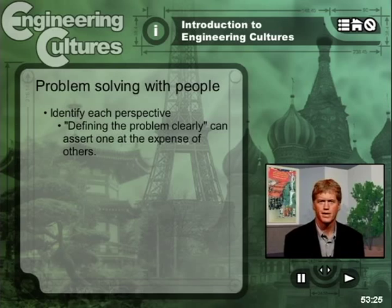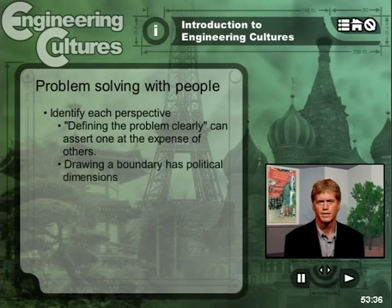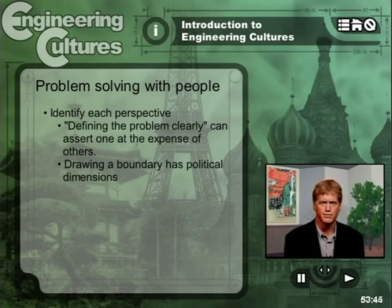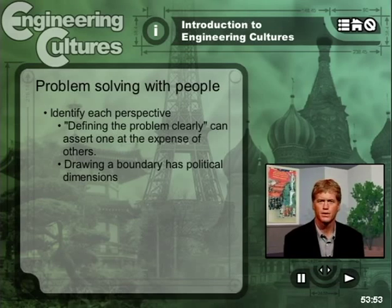For me to define the problem in a way that might be clear in my terms just might not be clear in your terms. Once we think about problem solving in relationship to people, we can begin to see that the very act of drawing a boundary around a problem has non-technical or political dimensions, depending on who controls the definition. Because, again, someone gains a little power and someone loses a little power. The core of mathematical problem solving by people, then, includes politics.